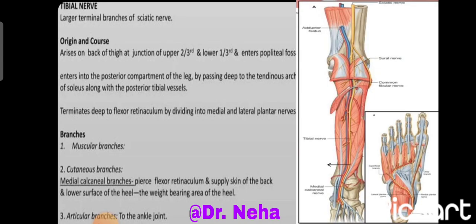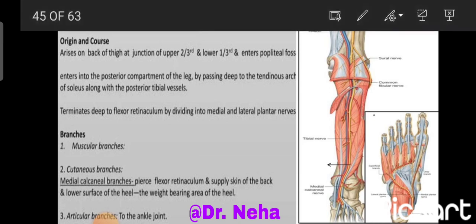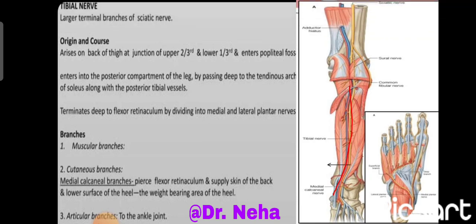The tibial nerve is the larger terminal branch of the sciatic nerve. It arises on the back of the thigh at the junction of the upper two-thirds and lower one-third, enters the popliteal fossa, then enters the posterior compartment of the leg by passing deep to the tendinous arch of the soleus along with the posterior tibial vessels. It runs downwards and medially accompanying the posterior tibial artery, passes beneath the flexor retinaculum, and enters the sole to supply the muscles there. Branches include muscular branches to the muscles of the back of the leg, the medial calcanean branch supplying the skin of the back of the leg and the lower surface of the heel (the weight-bearing area), and articular branches to the ankle joint.